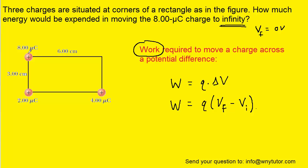To do that, we'll notice that the 8 microcoulomb charge is initially at this position right here. And at that position, there are these two charges that are producing an electric potential at that point. So we're going to calculate the electric potential produced by this charge and add it to the electric potential produced by this charge — that's going to give us the initial electric potential at this point. Notice we don't have to calculate the initial potential from the 8 microcoulomb charge itself, only from the two charges that are located some distance away from it.